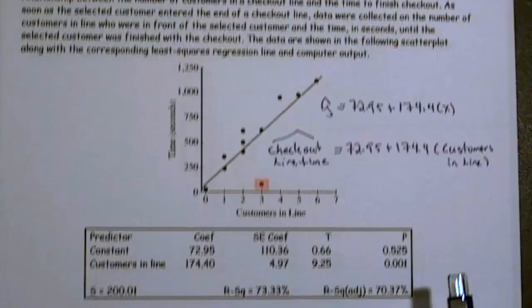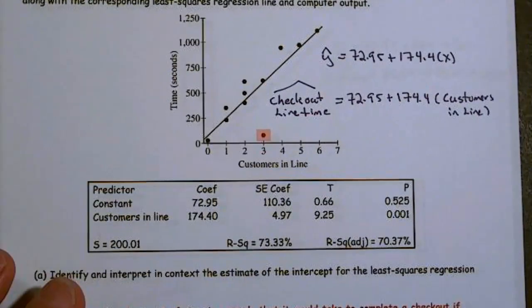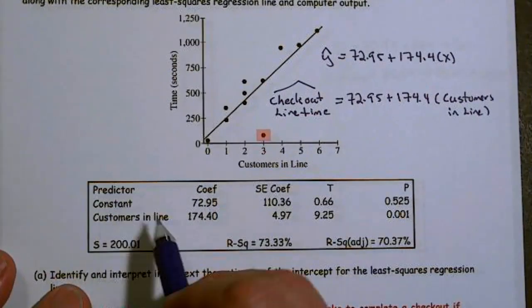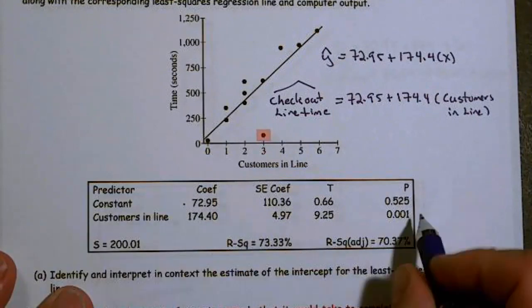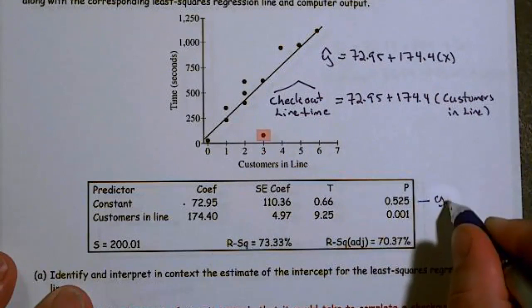We're taking a look at the computer output, and we should be looking for the constant and that tells me that's my y-intercept. So this entire line right here refers to the y-intercept.